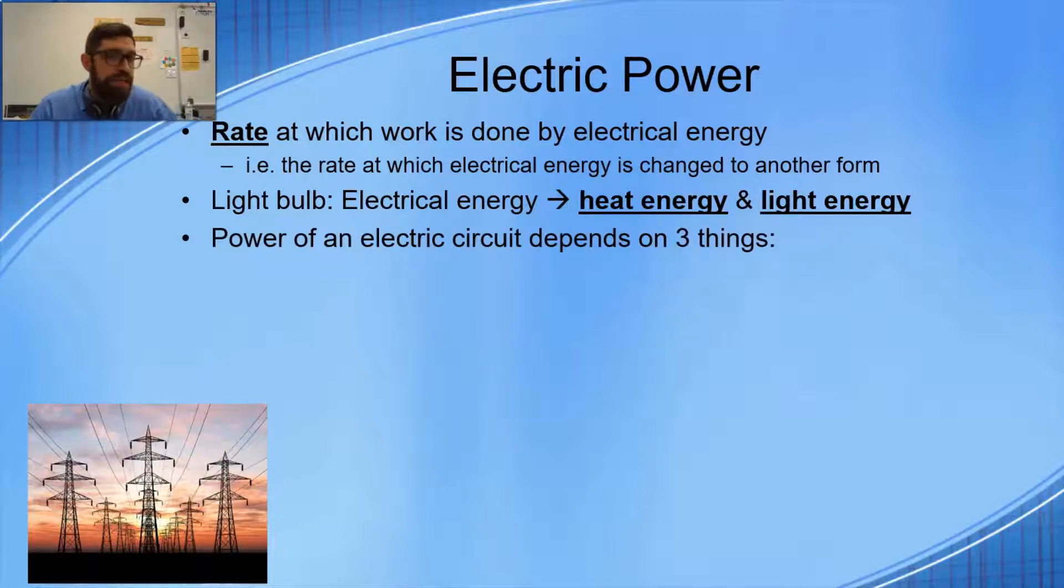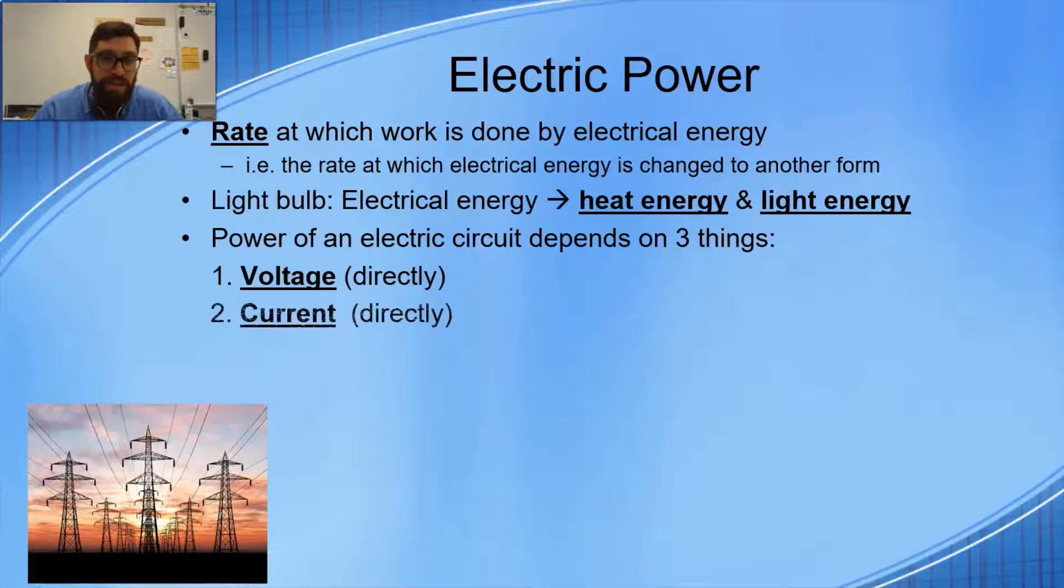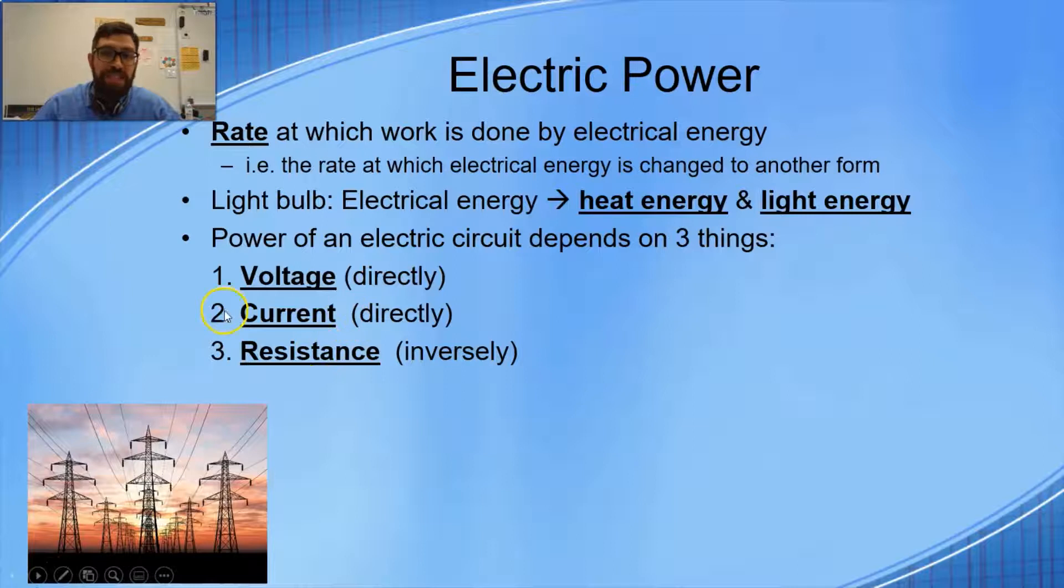So the power in any circuit, in any device, depends on three things. Number one, it depends on the voltage, and that's a direct relationship. The greater the voltage, the greater the power. The second thing that power depends on is current. The greater the current, that means the faster electrons are being delivered to that device, the faster we can convert electrical energy to something else. And then resistance in a circuit is inversely related because resistance decreases the current. So if current goes down, then the power is going to go down as well.